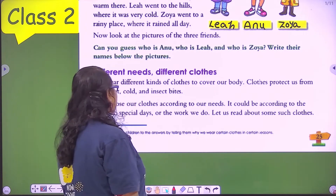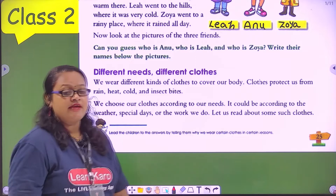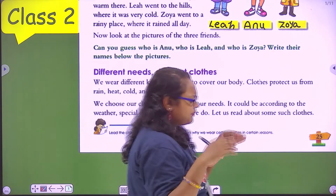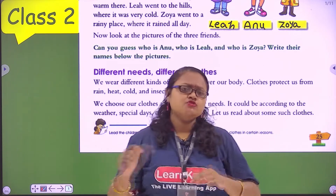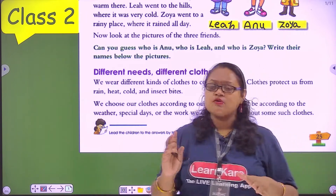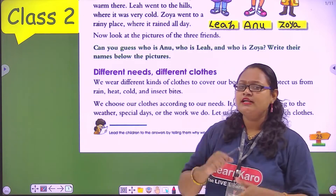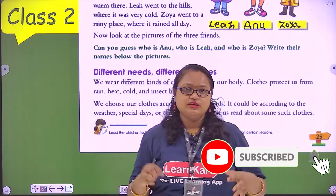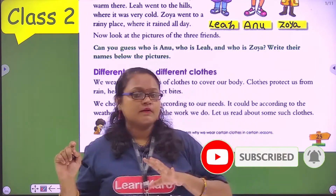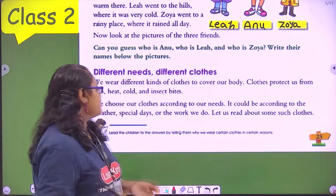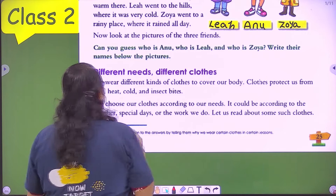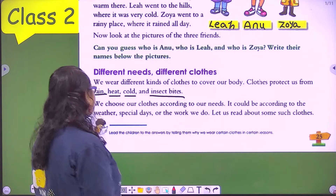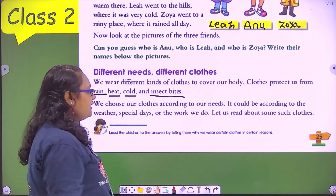We need different clothes for different needs. We wear different kinds of clothes to cover our body. Clothes protect us from rain, heat, cold, and insect bites. Just as our house protects us from heat, cold, and rain, in the same way our clothes also protect us. We choose our clothes according to our need.